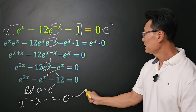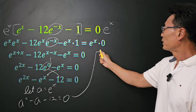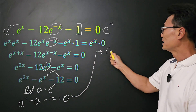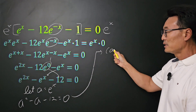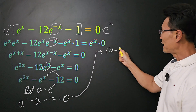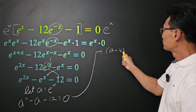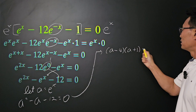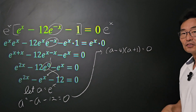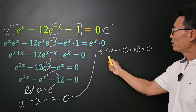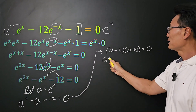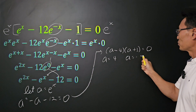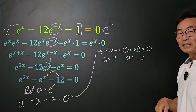And if we go ahead and factor this equation, we get a minus 4 times a plus 3 equals 0, where a equals 4 or a equals negative 3.